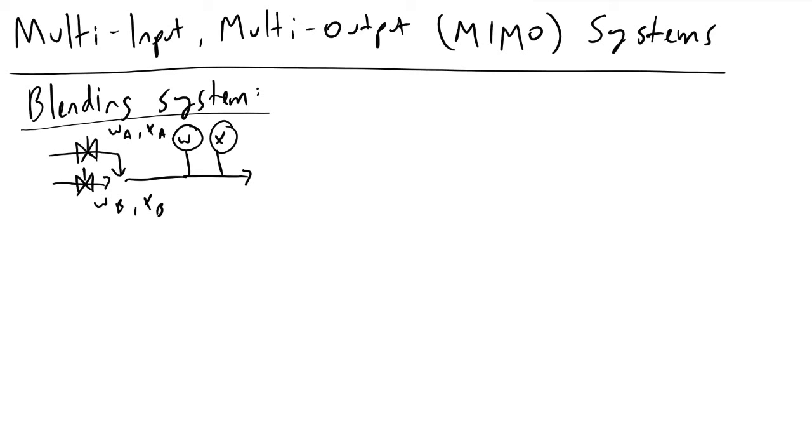In this case, we've got stream one with a flow rate wa and a composition xa, stream two with a flow rate wb and a composition xb. The stream that comes out of our blender will have a flow rate w and a composition of x.